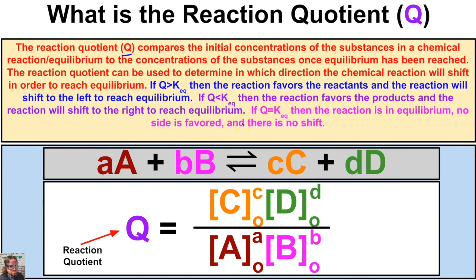The reaction quotient can be used to determine which direction a chemical reaction will shift to reach equilibrium. If Q is greater than Keq, the reaction favors the reactants and will shift to the left. If Q is less than Keq, the reaction favors the products and will shift to the right. If Q equals Keq, the reaction is currently at equilibrium with no shift in either direction.